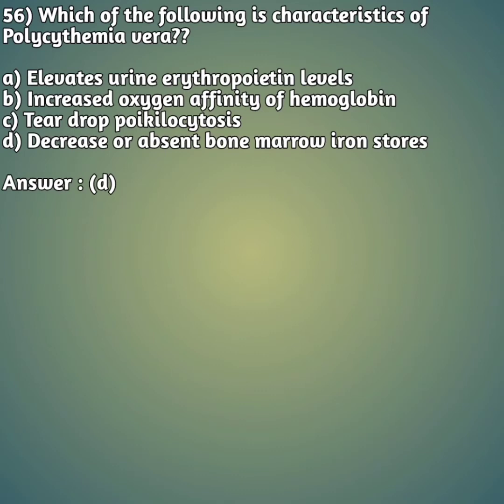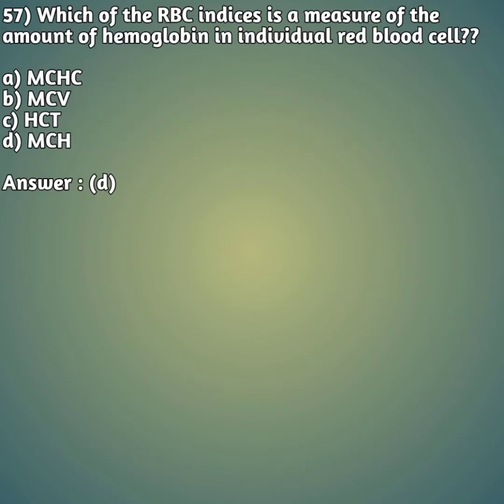Moving on to the 57th question: which of the following RBC indices is a measure of the amount of hemoglobin in individual red blood cells? Option A: MCHC. Option B: MCV. Option C: HCT, which is also called PCV or packed cell volume. Option D: MCH. The right answer is D - MCH.